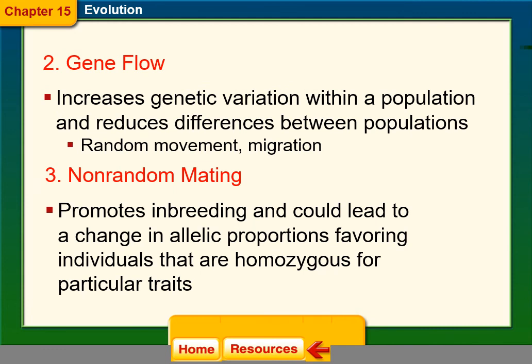Gene flow increases genetic variation within a population and reduces differences between populations through random mating and migration. Non-random mating, on the other hand, promotes inbreeding and can lead to changes in allelic proportions, favoring individuals that are homozygous for particular traits — which is where dangerous homozygous recessive traits can start appearing.